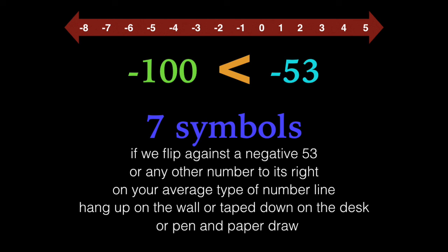If we flip against a negative 53 or any other number to its right on your average type of number line, hang up on a wall or tape down on a desk or pen and paper draw.